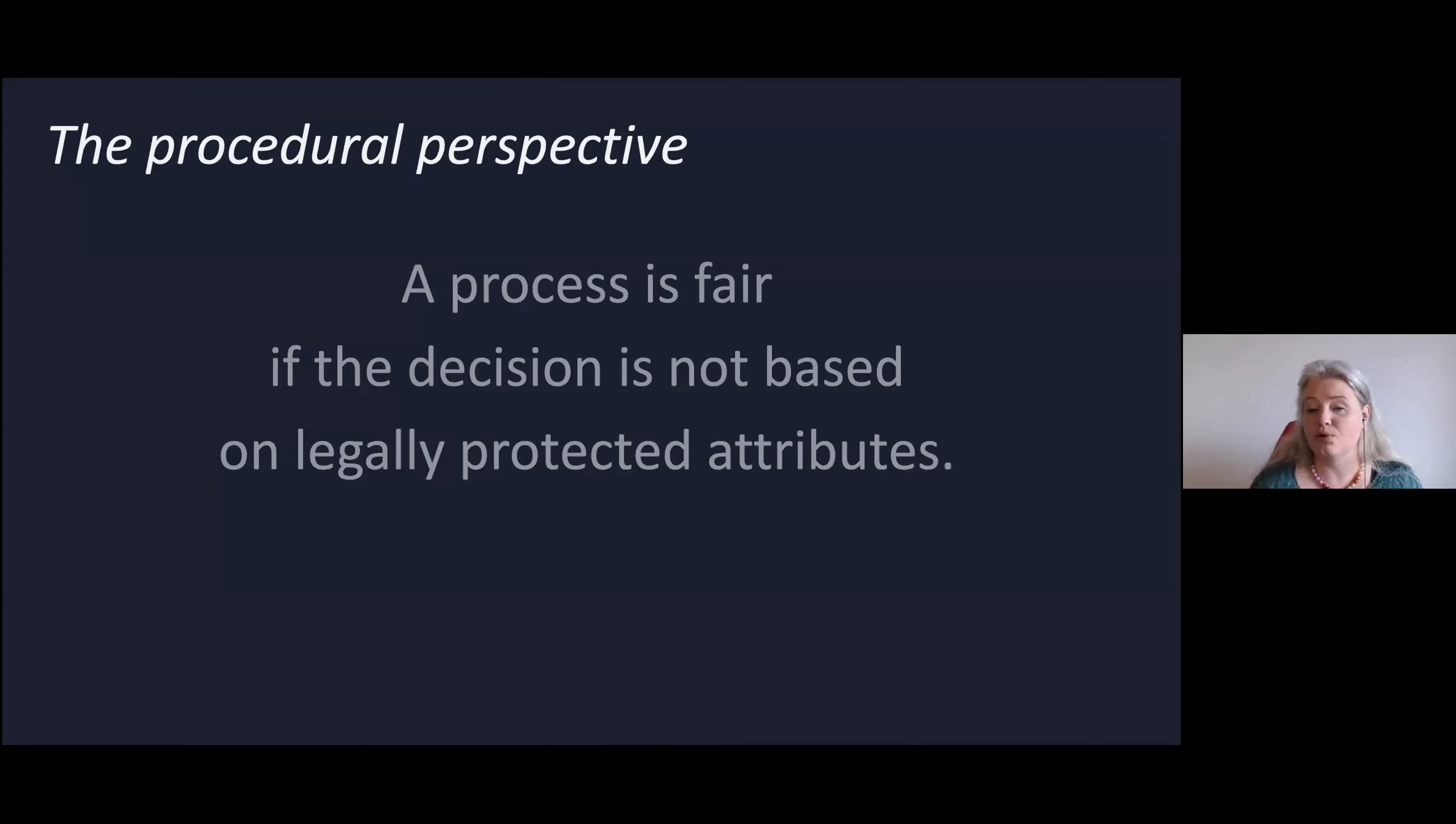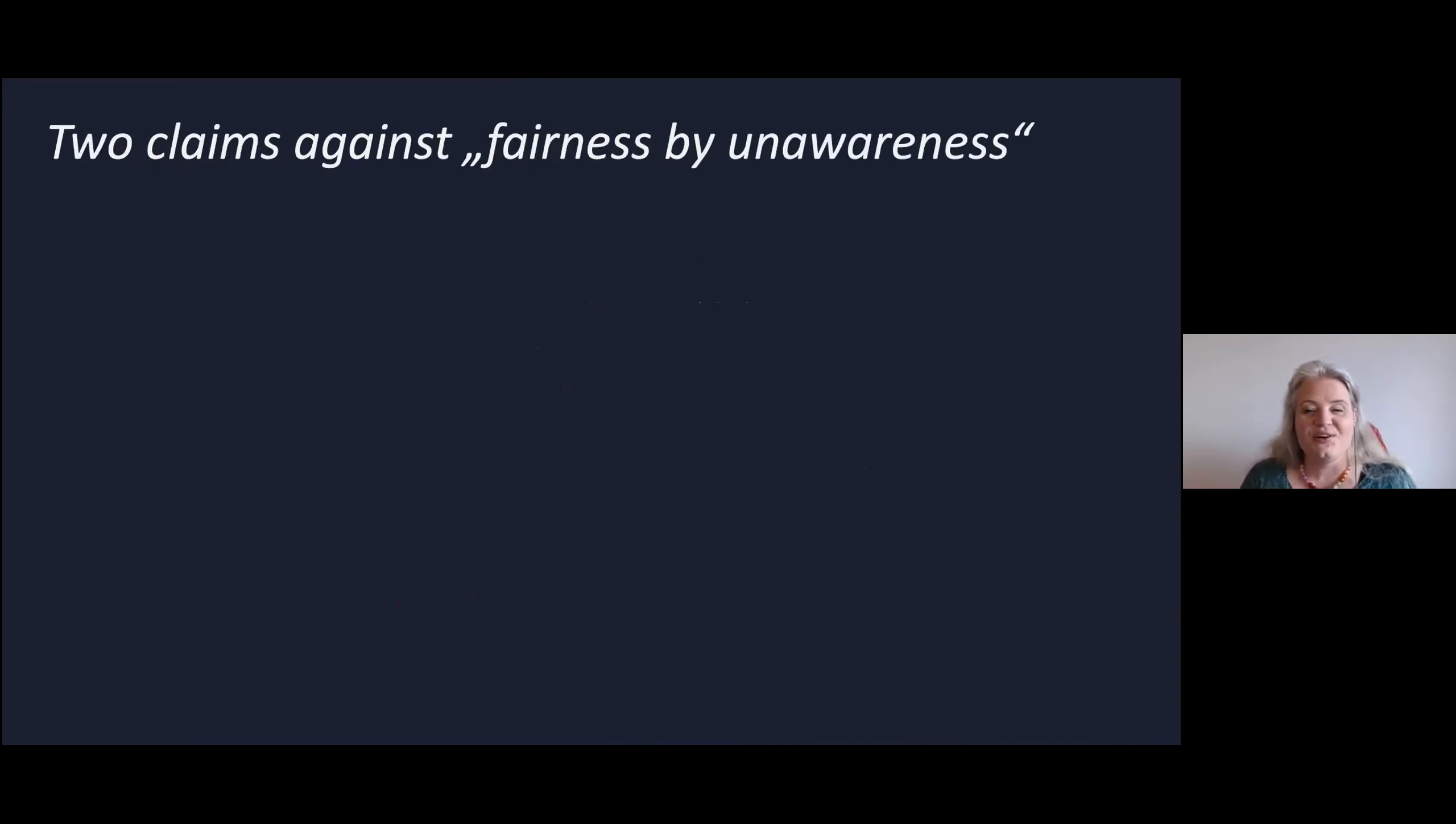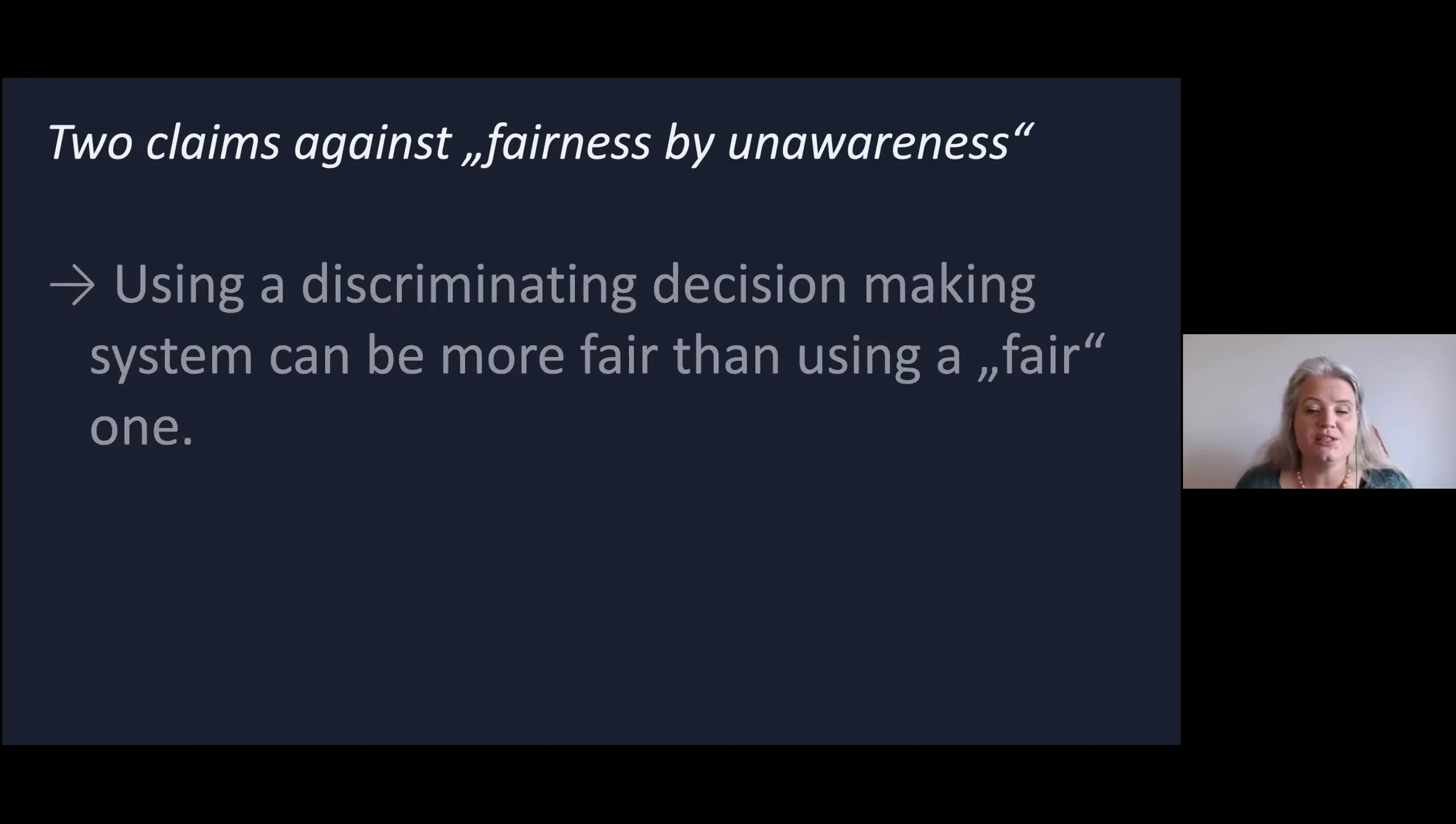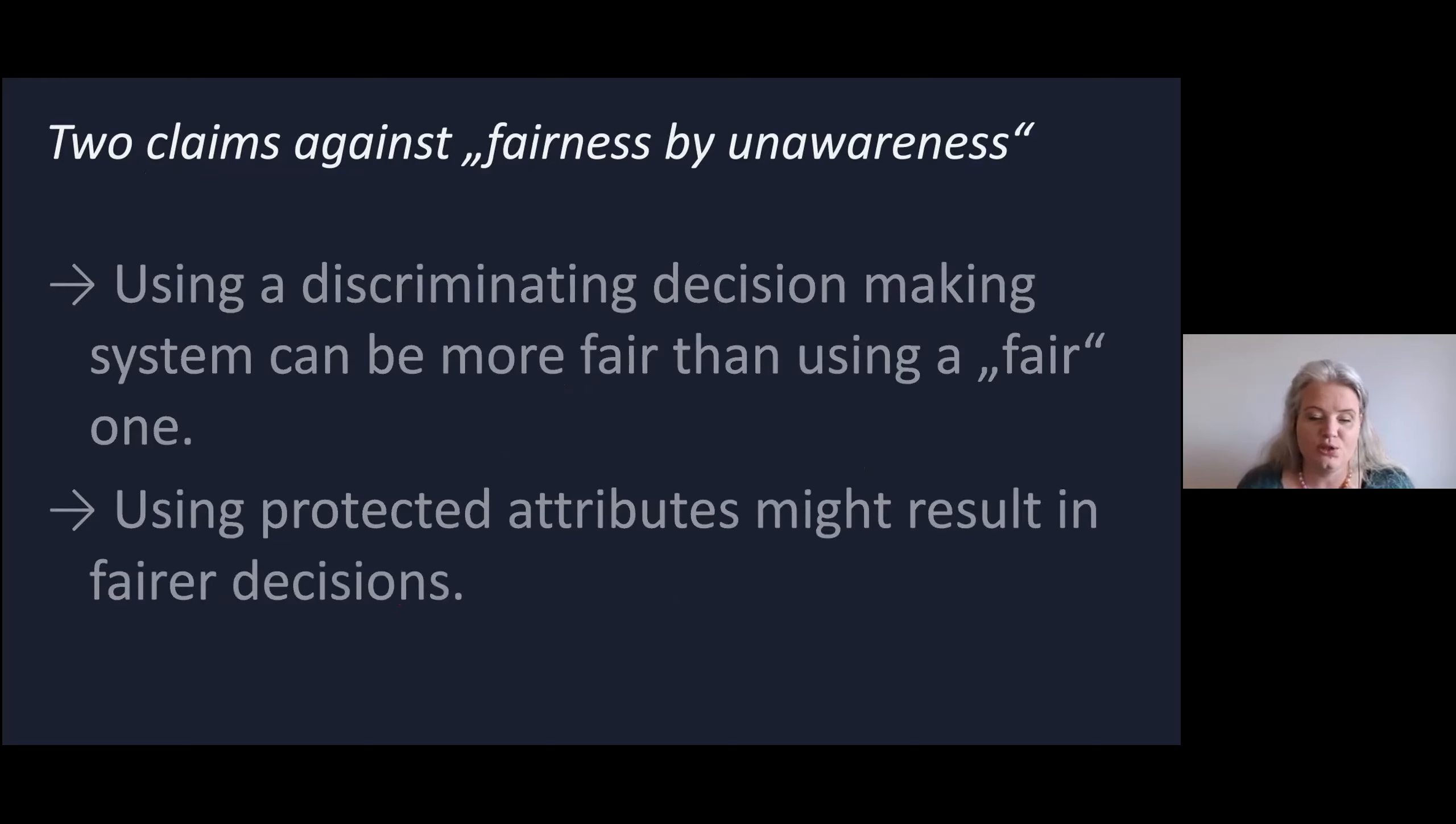They say that a process or decision is fair if the decision itself is not based on legally protected attributes. This is sometimes called fairness by unawareness. The idea is if there's no photo on the CV and you might not know the age or gender of a person, how can you possibly discriminate, right? I want to lay open two claims against this idea. The first claim is that using a discriminating decision-making system can be more fair than using a fair one. The second is using protected attributes might actually result in fairer decisions.